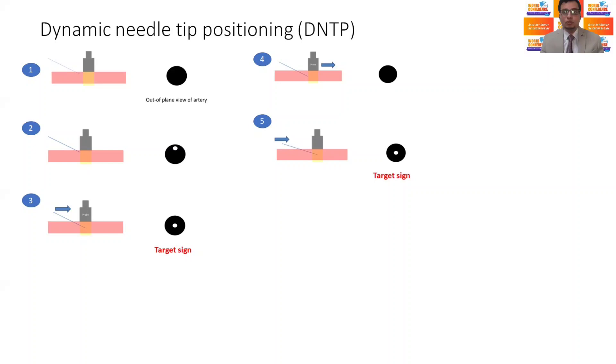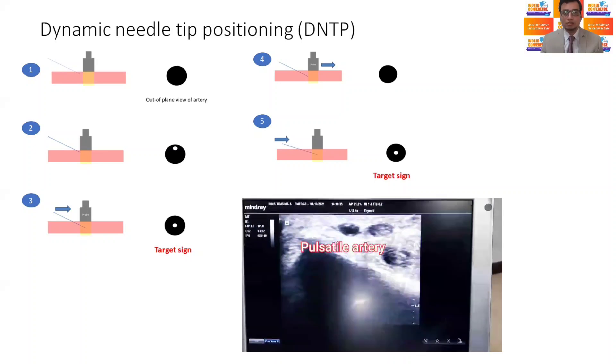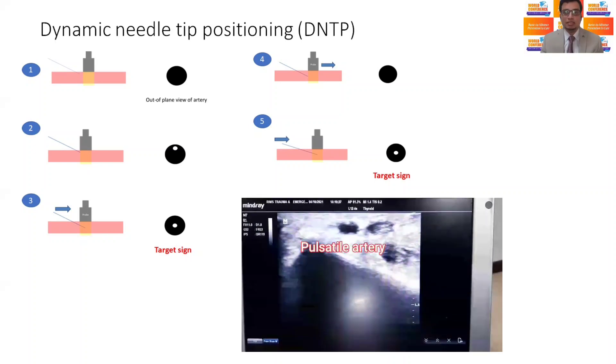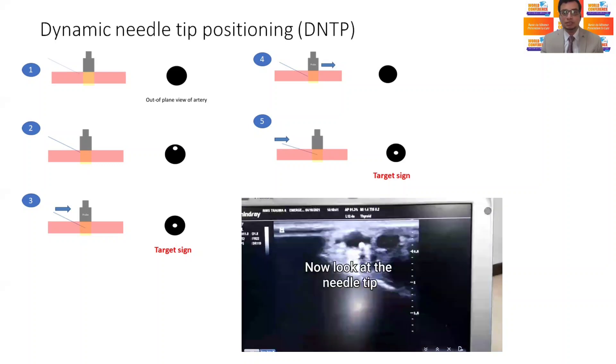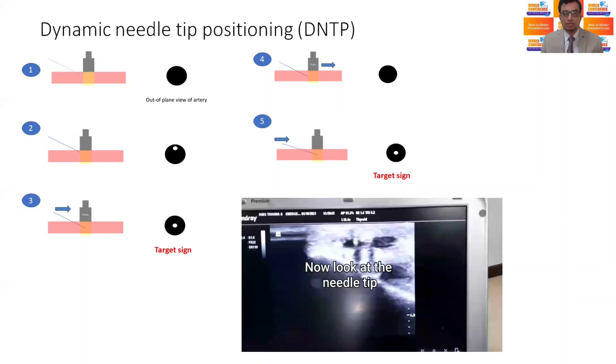The probe is placed to view out-of-plane radial artery and its position is adjusted to place over the skin to bring the artery in the center of the ultrasound screen. Then the needle is inserted at a point of the skin which corresponds to middle mark of the probe, and then the needle is advanced through the skin at an angle of approximately 30 degrees until the tip is seen inside the center of the arterial lumen, which is called target sign.